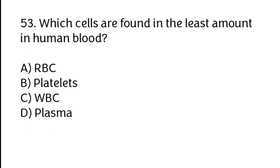Which cells are found in the least amount in human blood? Correct answer is C. WBC.